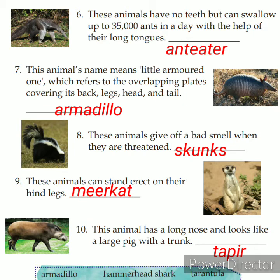Look at the next: these animals give off a bad smell when they are threatened. The name of these animals is Skunks. Look at the next: these animals can stand erect on their hind legs. The last and not least: this animal has a long nose and looks like a large pig with a trunk — this animal is known as a Tapir.